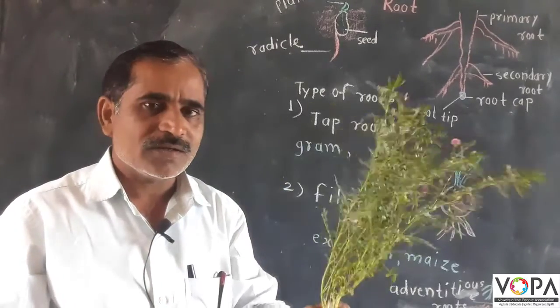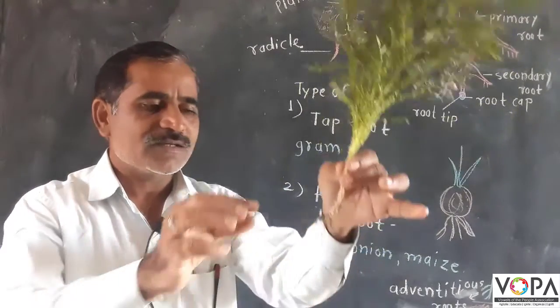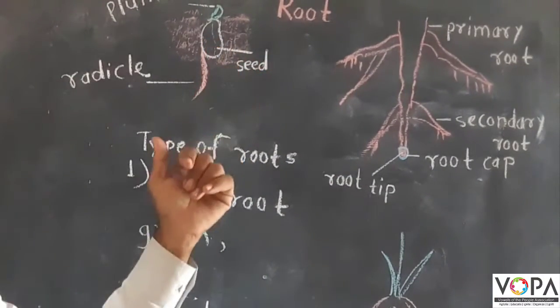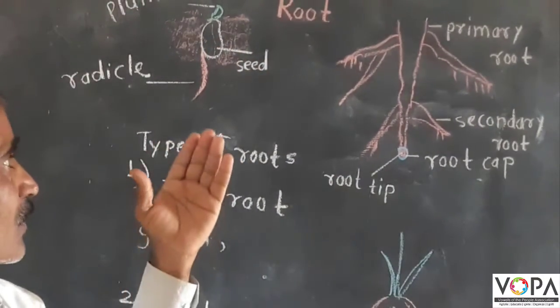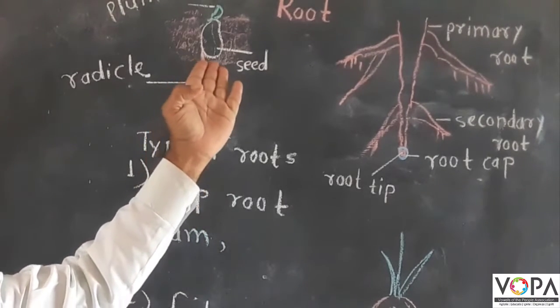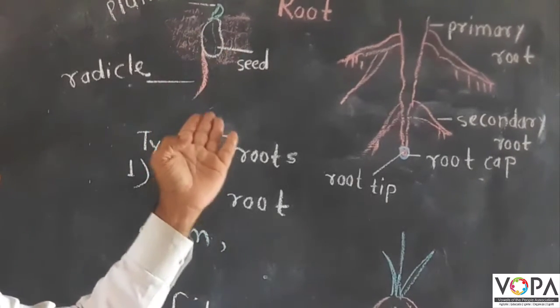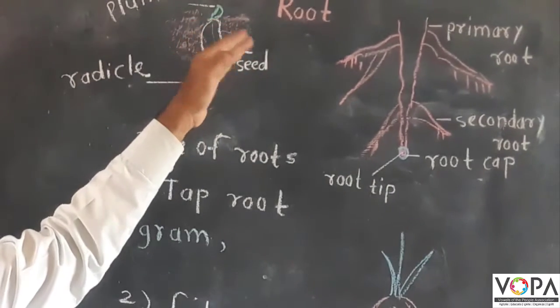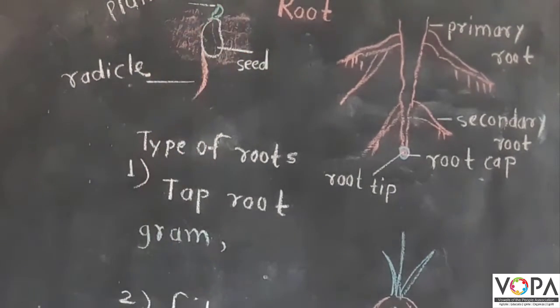We are going to learn the main part of the plant is root. See here, this is the figure of seed. From the seed, the part that grows into the soil is called radical and the part from the seed which grows above the soil is called plumule.